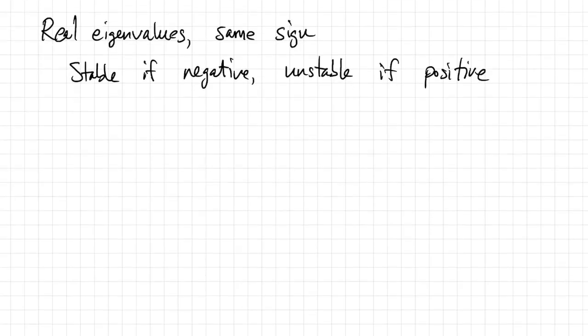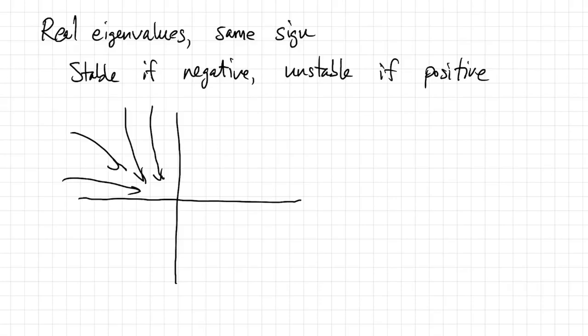I'll try to sketch the stable case. I'll do some computer-generated figures at the end that will look much better than these hand-drawn scratches. But in the case of a node, solutions basically just all get pulled into the origin or pushed away in the unstable case.